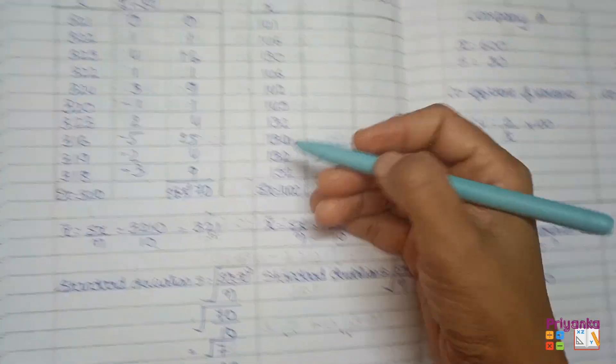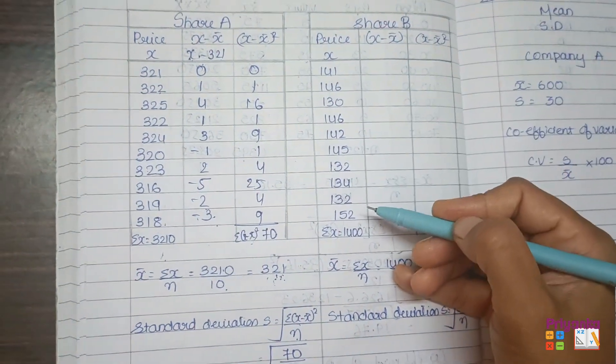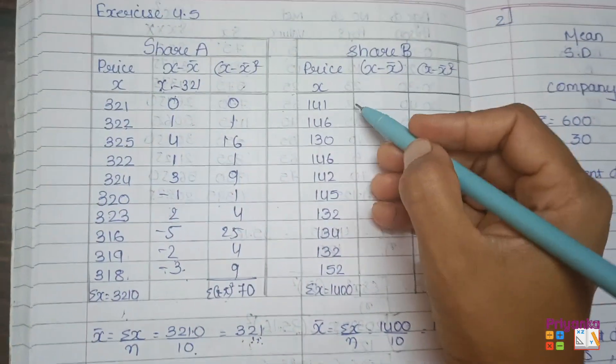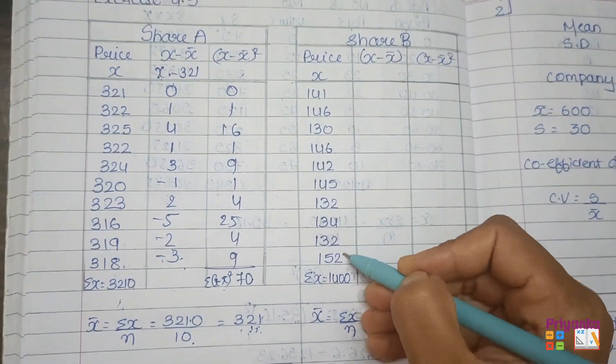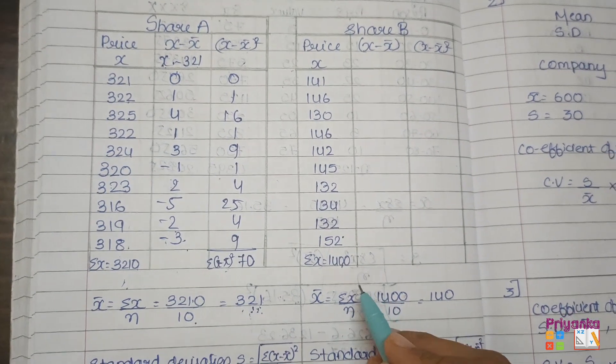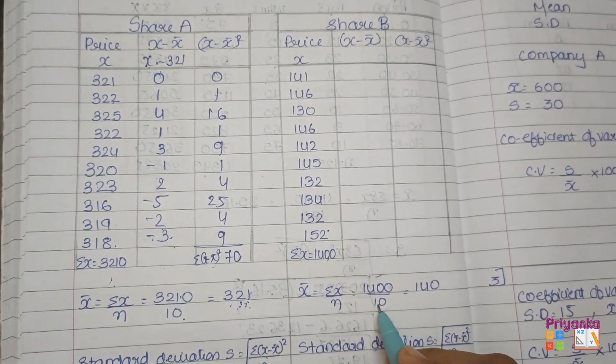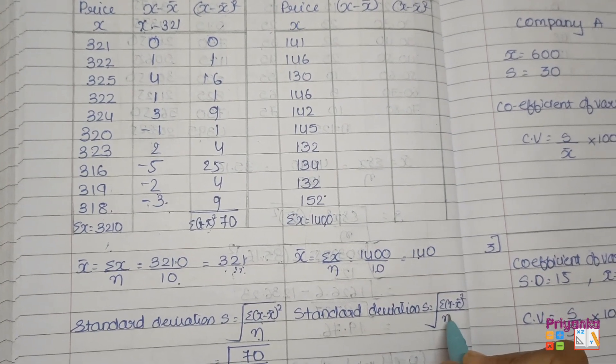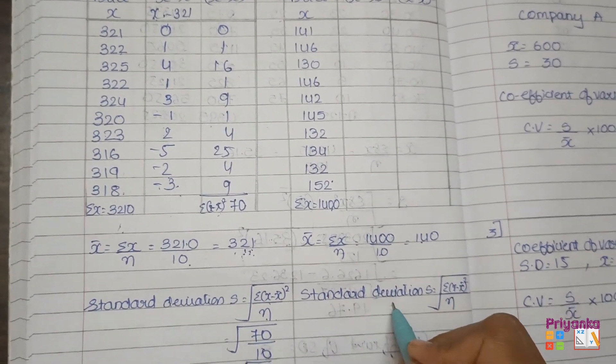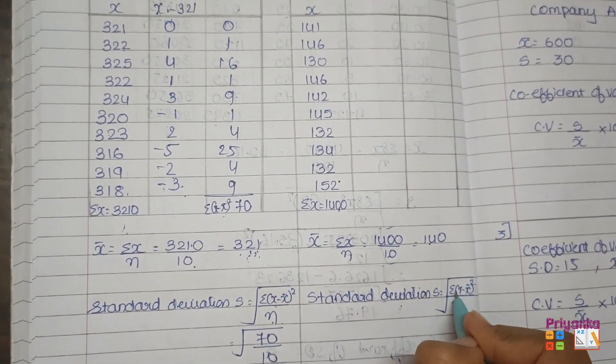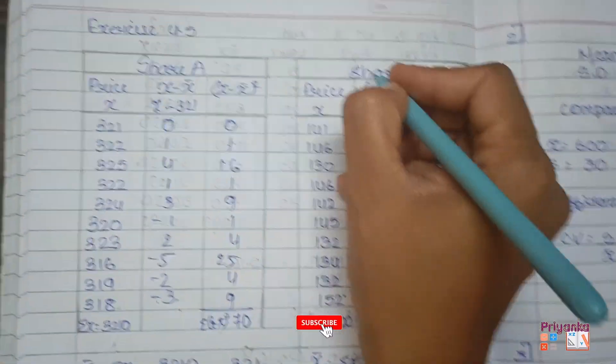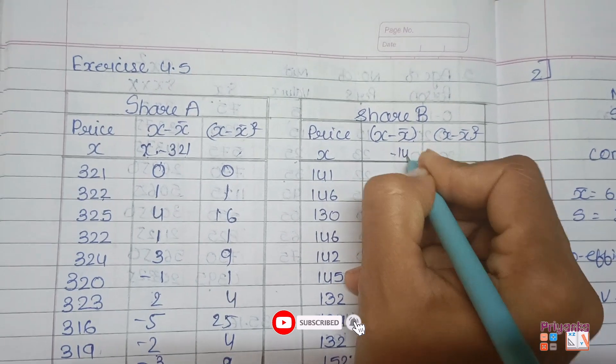Next, the same question where the information of share B is given. Let's start the calculation here. Again take the total of x, that is 1400, divide by the number of observations, that is 10. Here we get the answer in integer. So this is the formula we are going to use to find out standard deviation. And to find out this, we will get x minus x bar. The x bar value we found is 140.